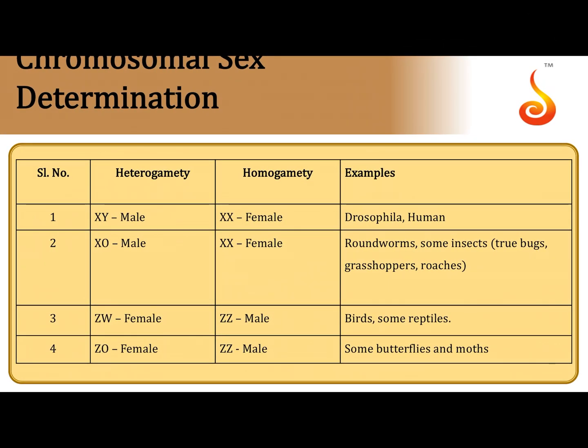The different types of chromosomal sex determination: there are specific chromosomes which have a function of determining the sex of the embryo after fertilization, and they are referred to as sex chromosomes. We can also call these chromosomes which specify the sex of an organism as allosomes.